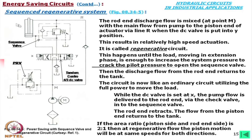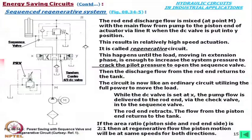With an area ratio of 2 to 1 — meaning if this area is 2 then this area is 1 — but keep in mind that does not mean the rod diameter to piston diameter is 1 to 2; the area ratio is 1 to 2. In that case, we can have the same speed in the regenerative mode.